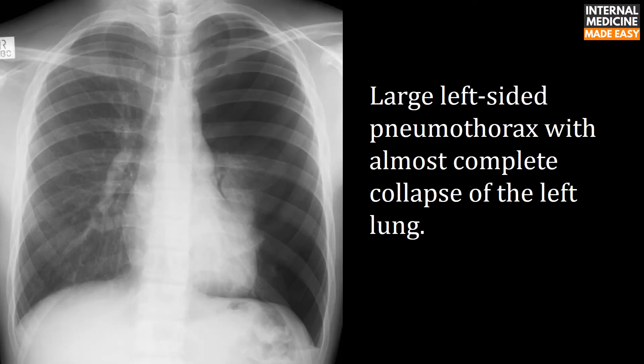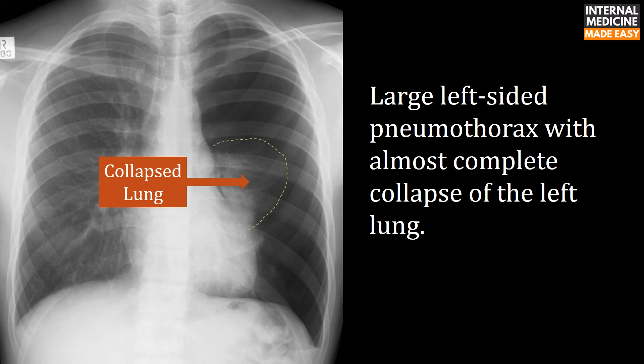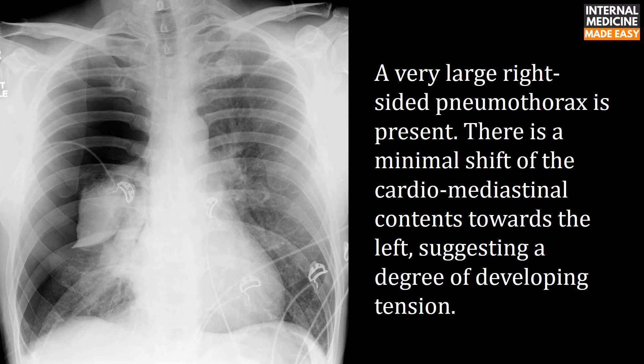This is a large left-sided pneumothorax with almost complete collapse of the left lung. In this next X-ray, a very large right-sided pneumothorax is present, with a minimal shift of the cardiomediastinal contents towards the left, suggesting a degree of developing tension.